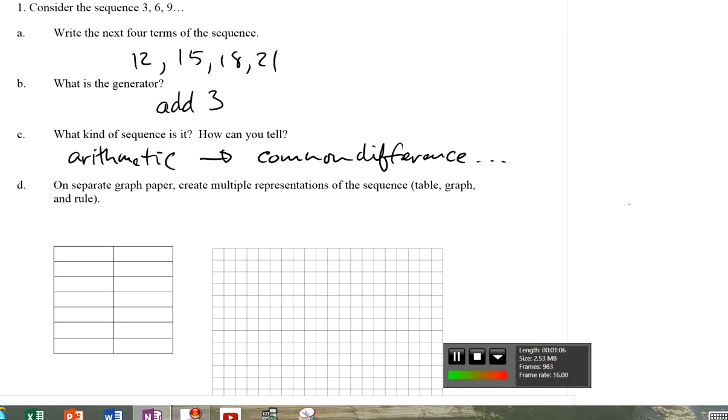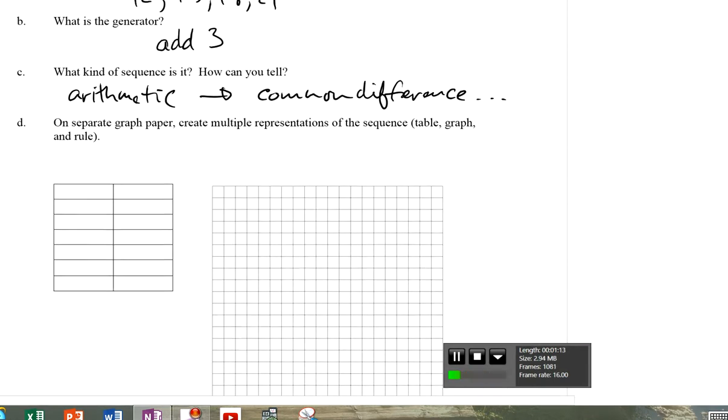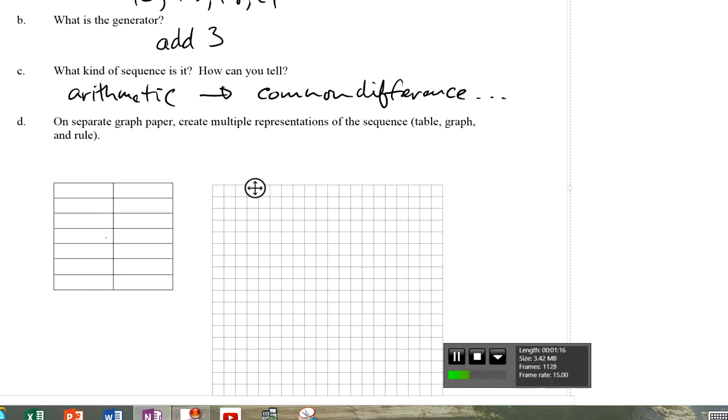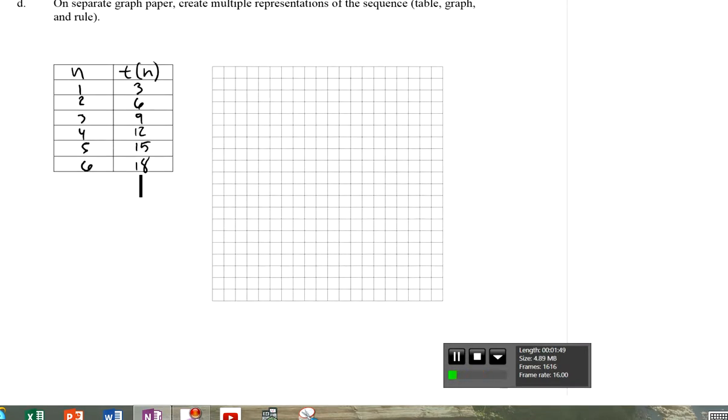Now, down below it said on a separate, create multiple representation of the sequence, table and graph. Pretty straightforward. I'll just put down here, this is the sequence, this is the value of n, and this is the value of t of n. The sequence that I had, I was given the three, six, and then the nine. So I've got value one, two, three, four, five, six. And when I plug in, I would get three, six, nine, and then I'm just adding the three: 12, 15, 18, and then 21 would be the seventh value.